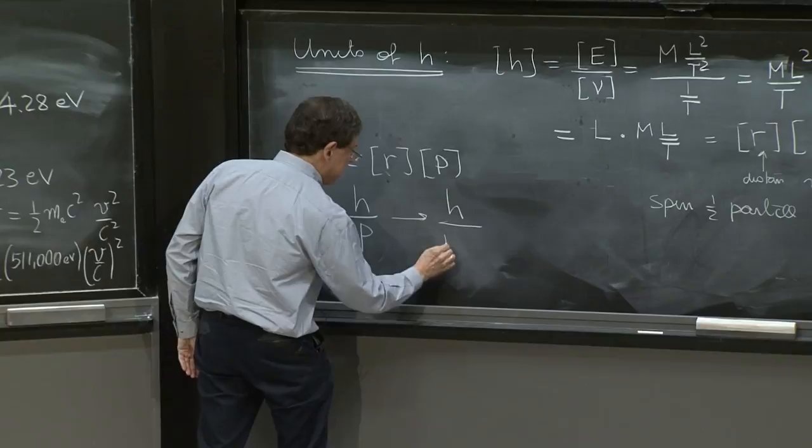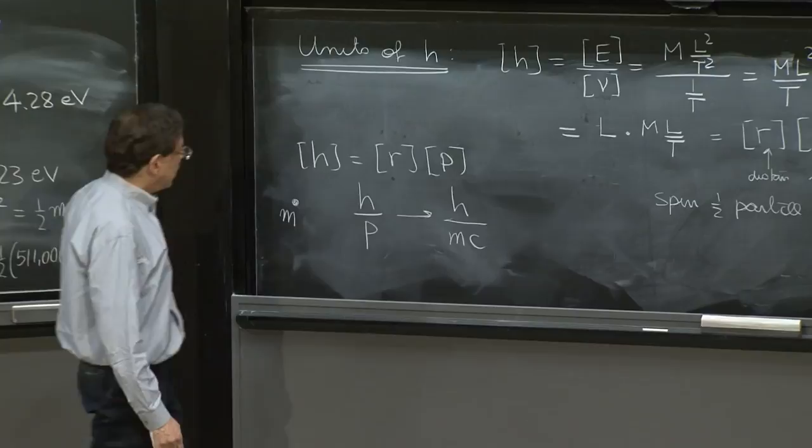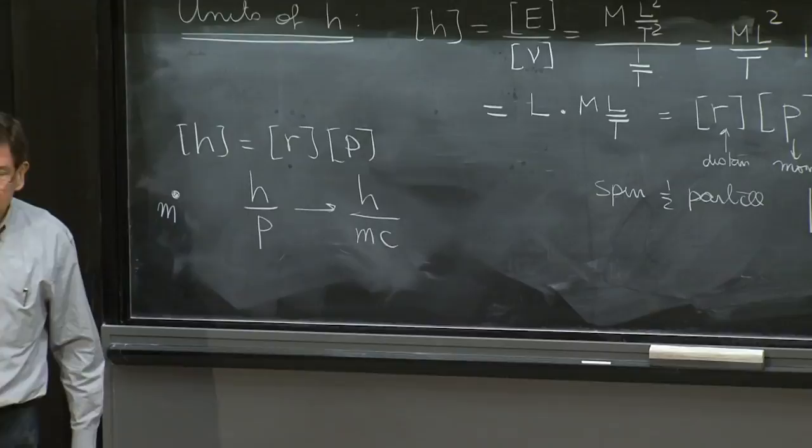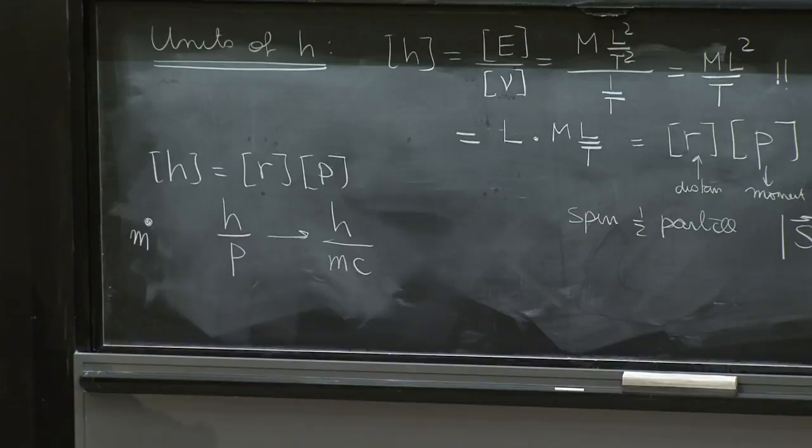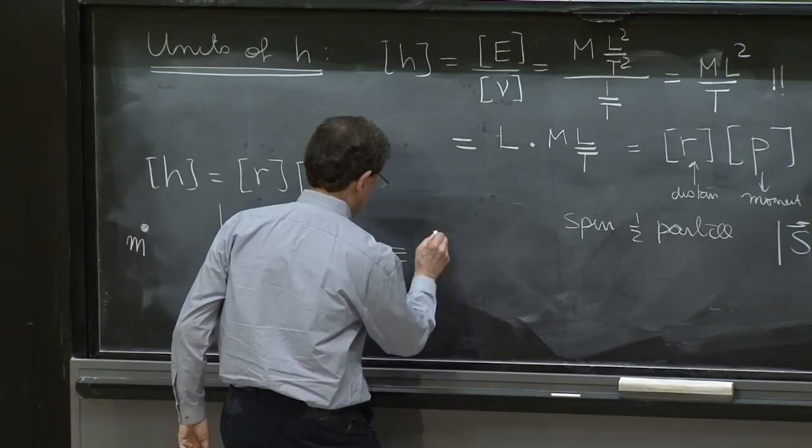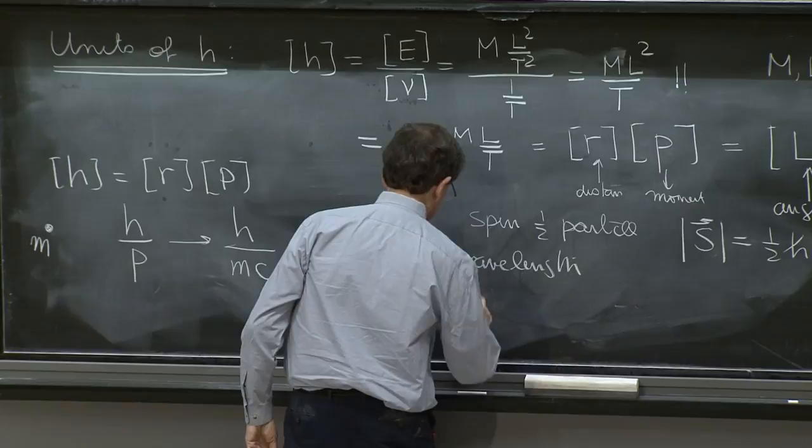You can put h and divide by the mass times the velocity of light. Why not? That's a velocity that is a constant of nature. So that way, you associate a length to any particle of a given mass. You don't have to tell me what is the momentum. You can just know the mass, and it has a length associated to it. So it's called the Compton wavelength of a particle.